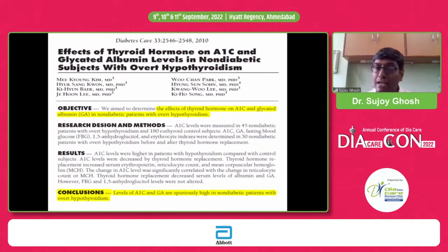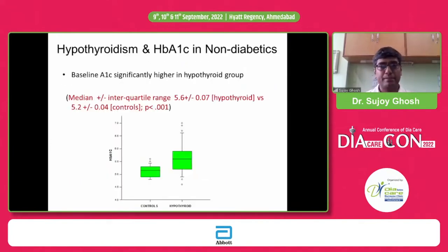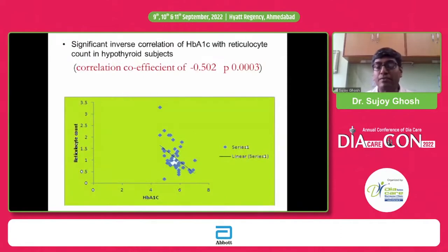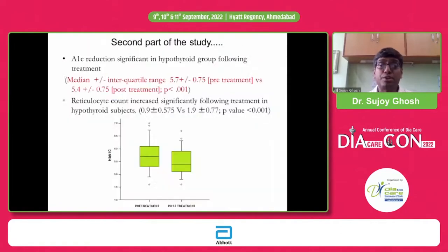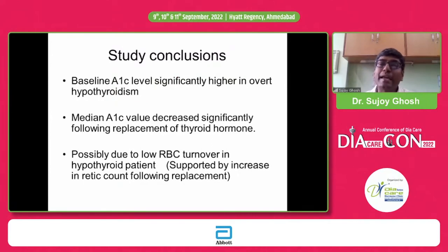A Diabetes Care paper shows that if hypothyroidism is present, the A1c will be falsely raised. We ourselves have done a study looking at the effect of thyroid function tests on HbA1c, in line with that Diabetes Care paper. We have shown that if an individual is hyperthyroid, there will be an opposite change of almost 0.4 in HbA1c — so what looks like 7% HbA1c in a hyperthyroid individual might actually be 7.4%. This change reverts once you treat the thyroid status.